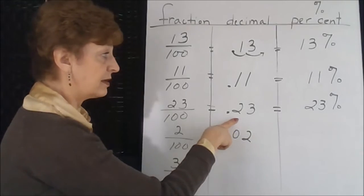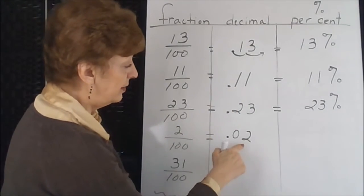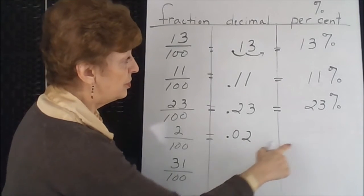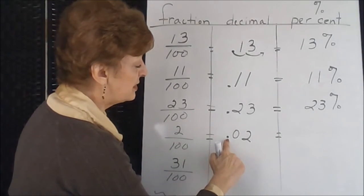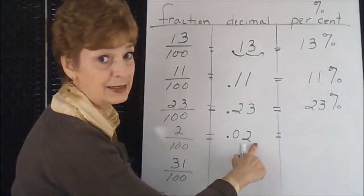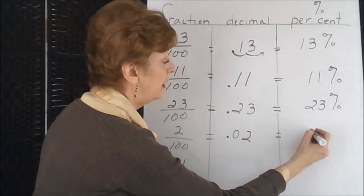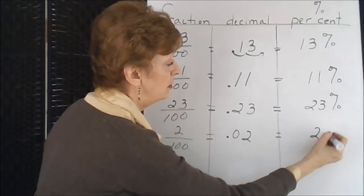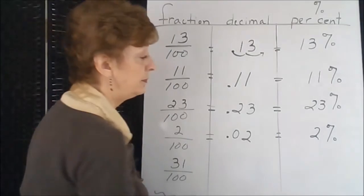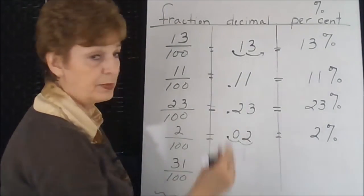This would be like if we were talking money, this would be 2 cents, this would be 23 cents, this would be 11 cents. To take the decimal value to the percent, you simply move the decimal point two places to the right. But you're going to the right so it would be 2 percent. See how the decimal point went one, two, and then disappeared.